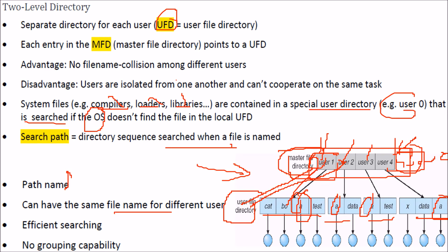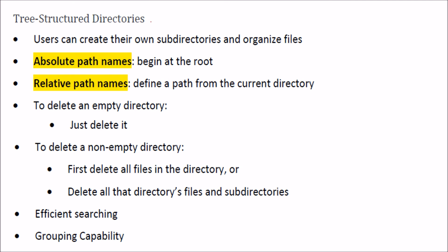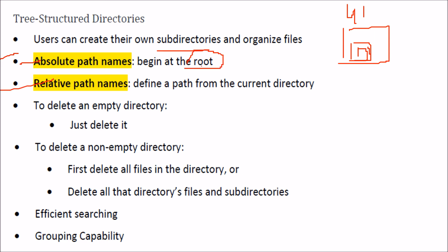We start with the path name, and users can have the same file name — searching is good here. But grouping capability is limited. That is why we have the tree structure directory, where users can create their own subdirectories and organize files. There are two types of path names: absolute path names, which always begin with the root, and relative path names, which define a path from the current directory.